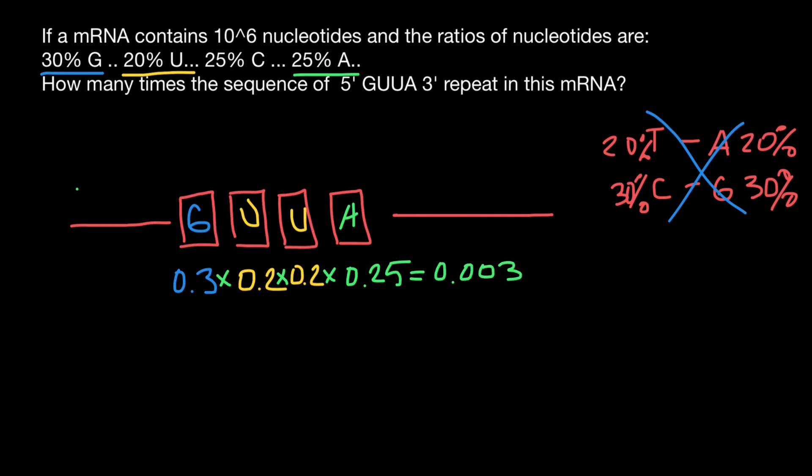What does it tell us? This tells us that probability, if we'll take a random sequence made of four nucleotides on the messenger RNA, that this is going to be guanine, uracil, uracil, and adenine. Probability is going to be on the scale between 0 and 1, 0.003. Or if you need an answer in percentage form, we have to multiply by 100. And we can say probability is going to be 0.3%.